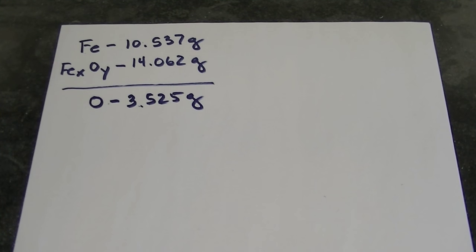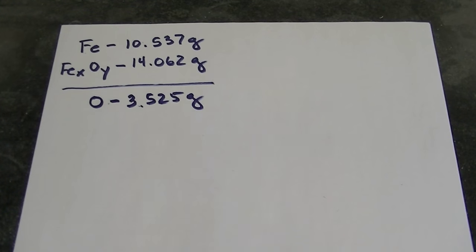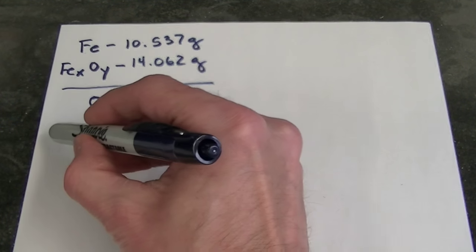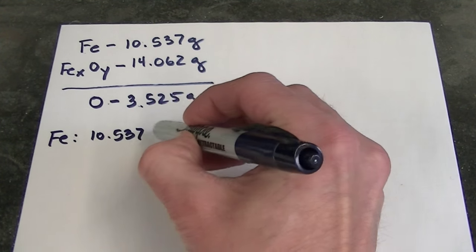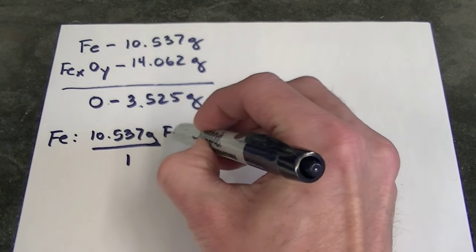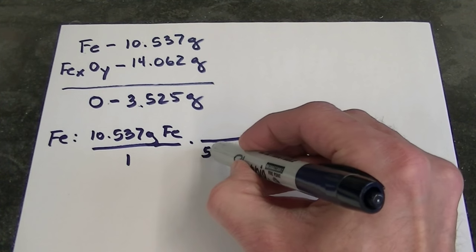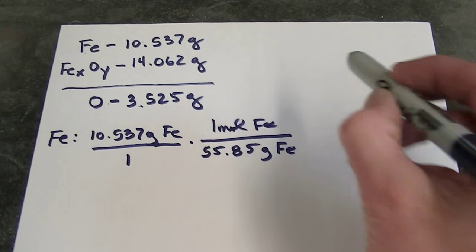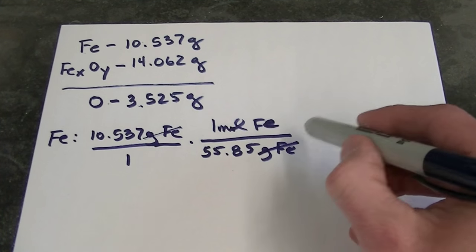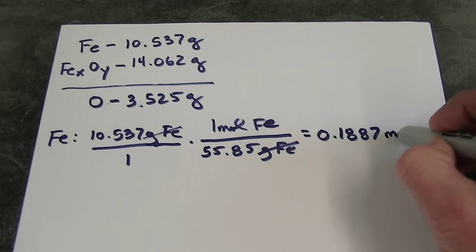Now what we're really after here is the molar ratio of iron to oxygen in the iron oxide. Well, I can't compare moles by looking at grams. So let's go ahead and convert these masses to moles. So for iron, it's going to look like this. I know I started with 10.537 grams of iron. I see that if I divide the grams of iron by the molar mass of iron, 55.85 grams of iron is one mole, then I can convert grams of iron into moles of iron. If I do that math, it comes out 0.1887 moles of iron.